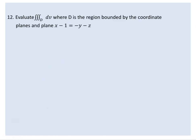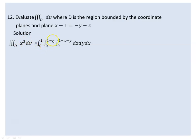The next problem: evaluate the triple integral of 1 dV where D is the region bounded by the coordinate planes and the plane x plus y plus z equals 1. This sets up as the integral from 0 to 1, 0 to 1 minus x, 0 to 1 minus x minus y, of dz dy dx.